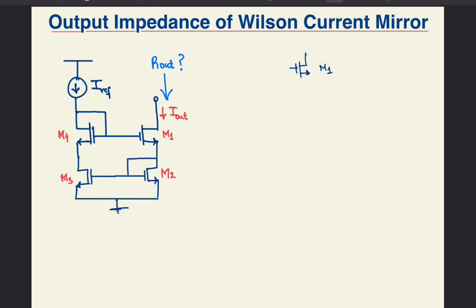Visually, for the purpose of the output impedance calculation, the system can be depicted as M1 with some resistance at its source node, and then you have an amplifier with a negative gain from the source of M1 to its gate.